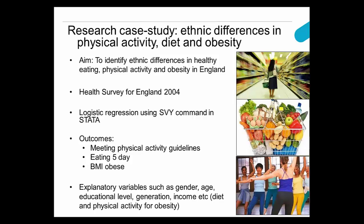The three outcomes we used were obesity (body mass index greater than 30 for adults), meeting the physical activity guidelines (at the time, five days a week, 30 minutes or more at least moderate intensity), and five-a-day fruit and vegetable consumption. We used logistic regression models for male and female adults separately. We first ran simple models using just ethnicity and age to look at ethnic differences before accounting for confounders, then added a large number of explanatory variables to see if the ethnic differences were attenuated.